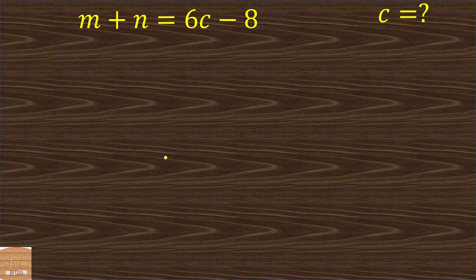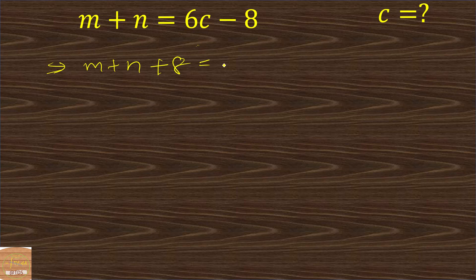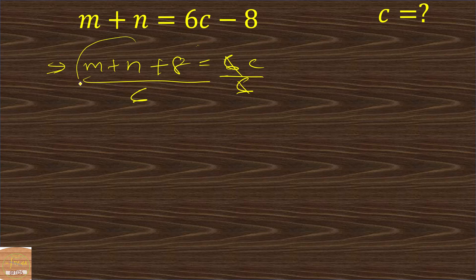Next example: we have to make c the subject. We have m plus n, so we send the minus 8 to the other side giving plus 8, equaling 6c. We divide both sides by 6 and that is the answer — we can't simplify further.